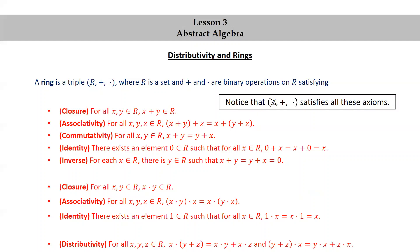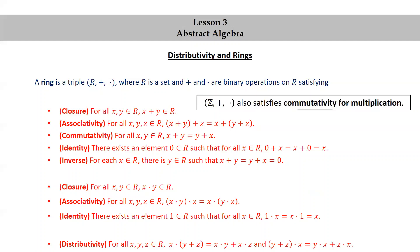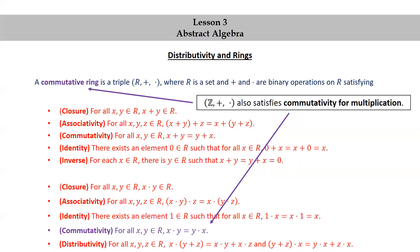The set of integers together with addition and multiplication satisfies all these axioms, so ℤ together with addition and multiplication is a ring. ℤ also satisfies commutativity for multiplication — for all x, y in R, x × y = y × x. If we add this property, we get what's called a commutative ring. A ring always satisfies commutativity for addition; when we add commutativity for multiplication, it's called a commutative ring.